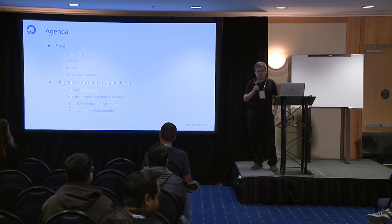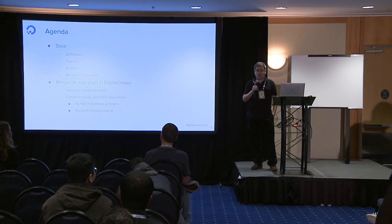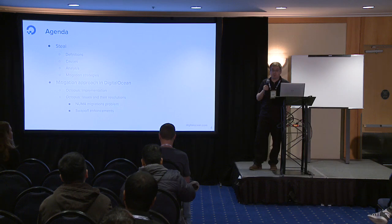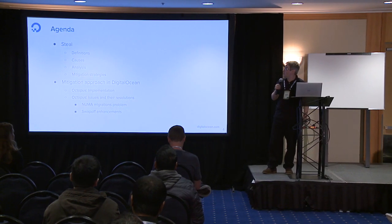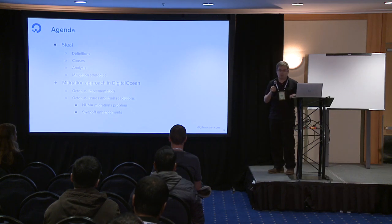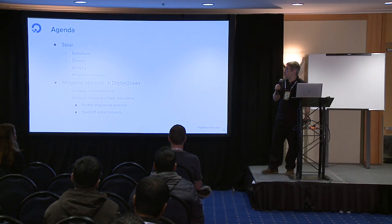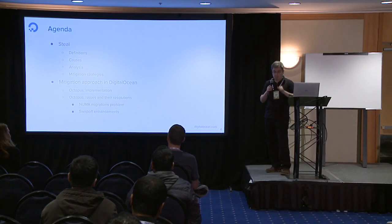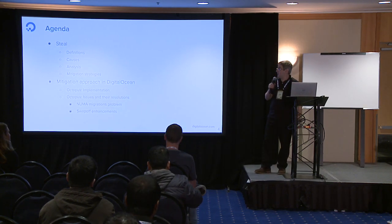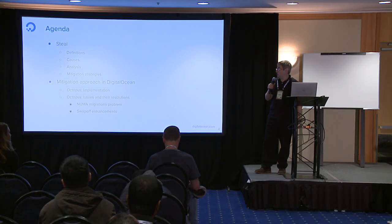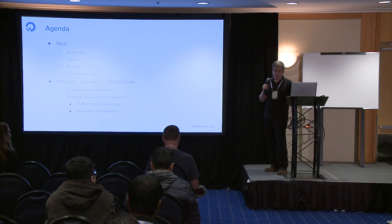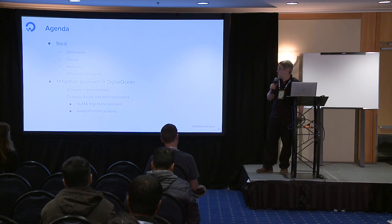We will be talking today about the historical evolution of our thinking about steal time on our hypervisors. First, we will talk about what steal is, just for the sake of completeness. Then we will talk about what causes steal and how we categorize it to establish a framework for further discussion, followed by mitigation of steal. We'll cover kernel heuristics that cause steal, and then the implementation - a user-space daemon called Octopus that runs in our hypervisor, and the challenges we ran into while implementing it.